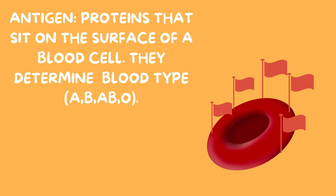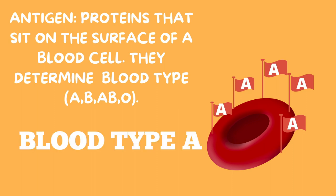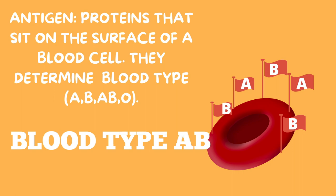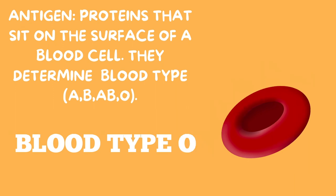So if we have a blood cell and it has an antigen with an A on it, then this is type A blood. If we have a red blood cell with a B antigen on it, then this is referred to as blood type B. If we have both A and B antigens, then this is blood type AB. If we have no antigens on our blood cell — zero antigens — then this is referred to as blood type O.